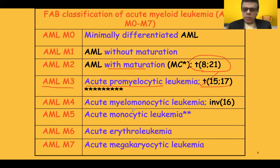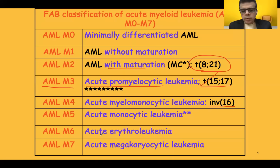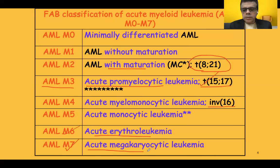AML M4 is acute myelomonocytic leukemia, which has inversion 16 as the genetic abnormality. Next comes AML M5, acute monocytic leukemia; then AML M6, acute erythro leukemia; and finally the rarer variant AML M7, which has a megakaryocytic preponderance. Let's study some of the important ones.